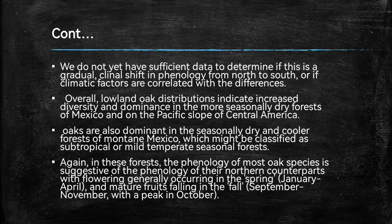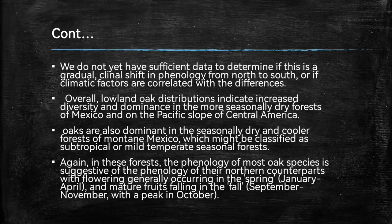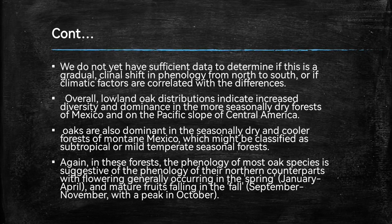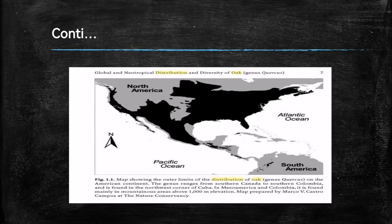We do not yet have sufficient data to determine if this is a gradual clinal shift in phenology from north to south or if climatic factors are correlated with the difference. Overall, lowland oak distributions indicate increased diversity and dominance in the more seasonally dry forests of Mexico and on the Pacific slope of Central America. Oaks are also dominant in the seasonally dry forests of Oaxaca, Mexico. In these forests, the phenology of most oak species involves flowering generally occurring in the spring, January to April, and mature fruits falling in the fall, September to November, with a peak in October. Here is a graph of the oak tree.